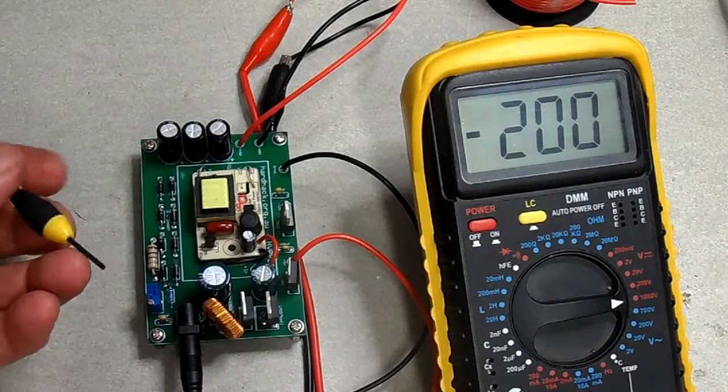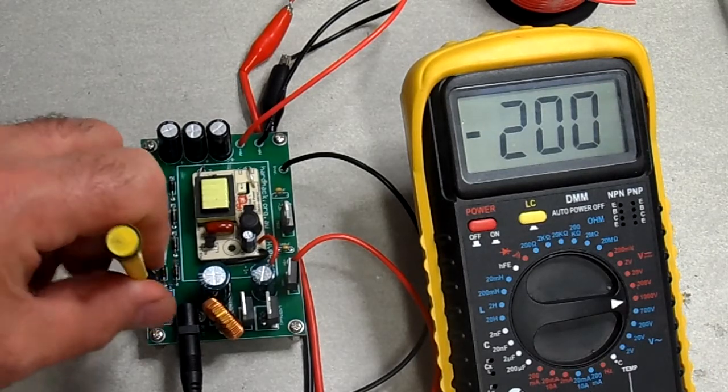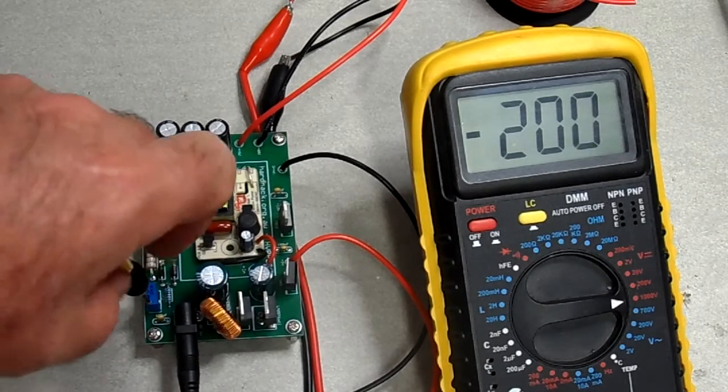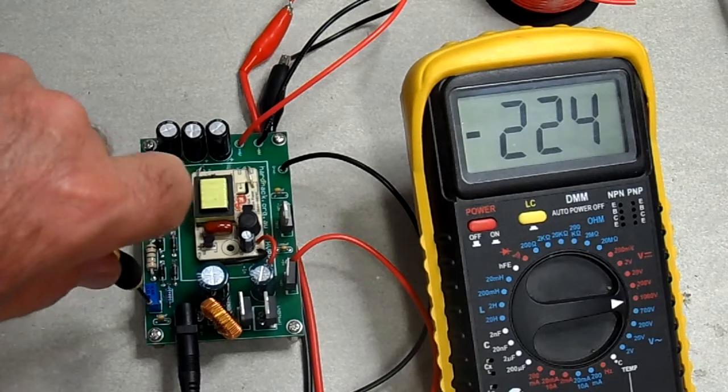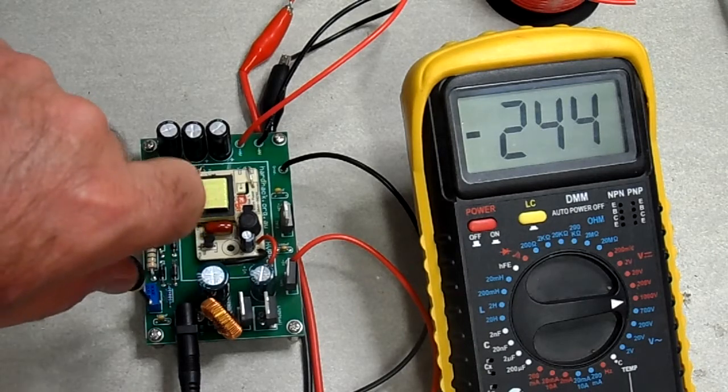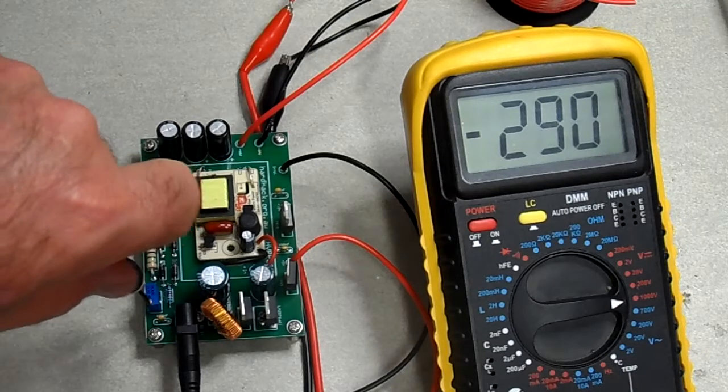This regulator can be adjusted with this trimmer screw and very easily adjusted to the right voltage of a Geiger tube.